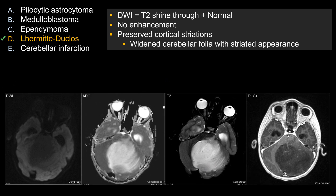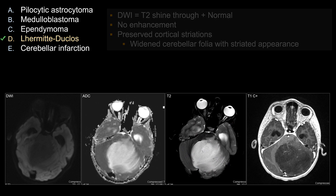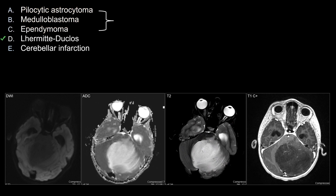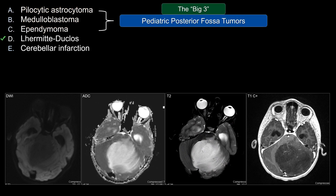Let's look at some other choices that do not work as well in this case. Pilocytic astrocytoma, medulloblastoma, and ependymoma are the big three for pediatric posterior fossa tumors. If you see a pediatric patient with a posterior fossa tumor, think about those three as predominantly your differential diagnosis.